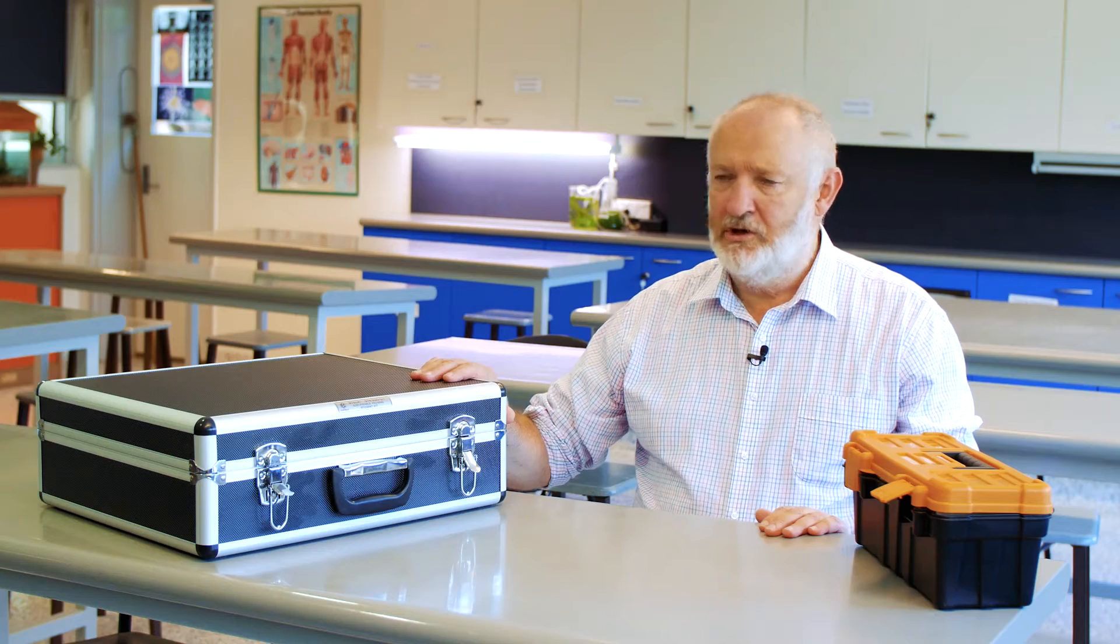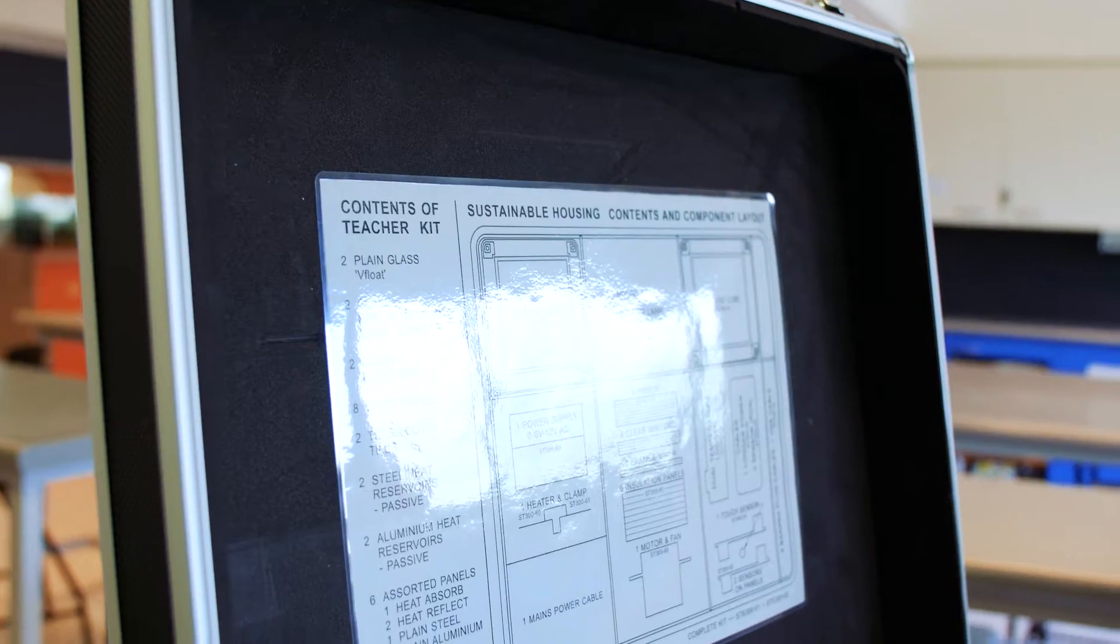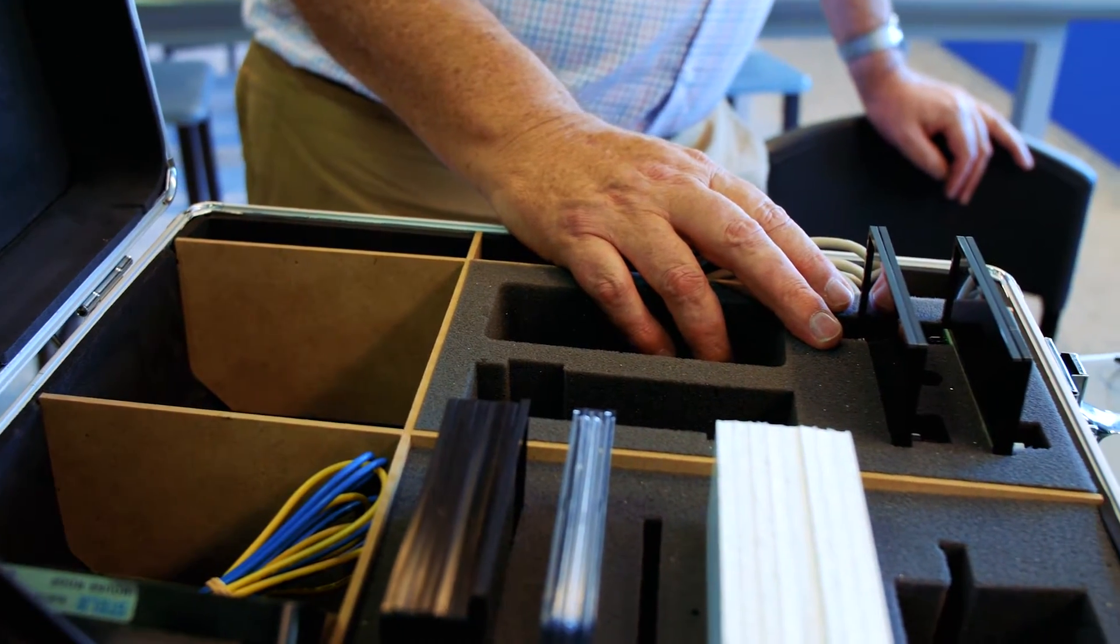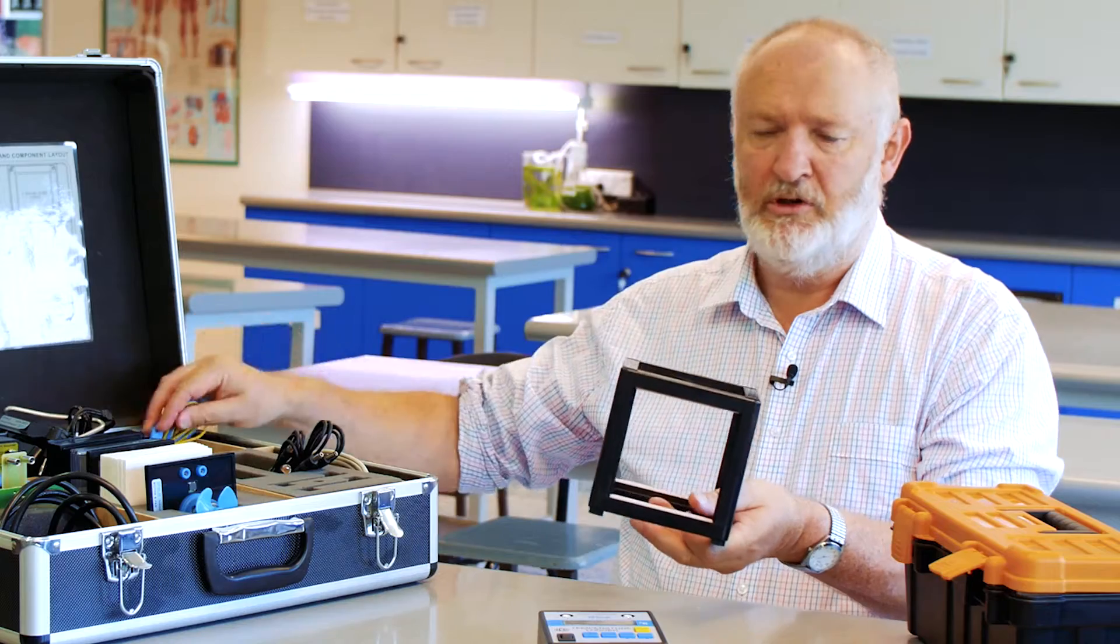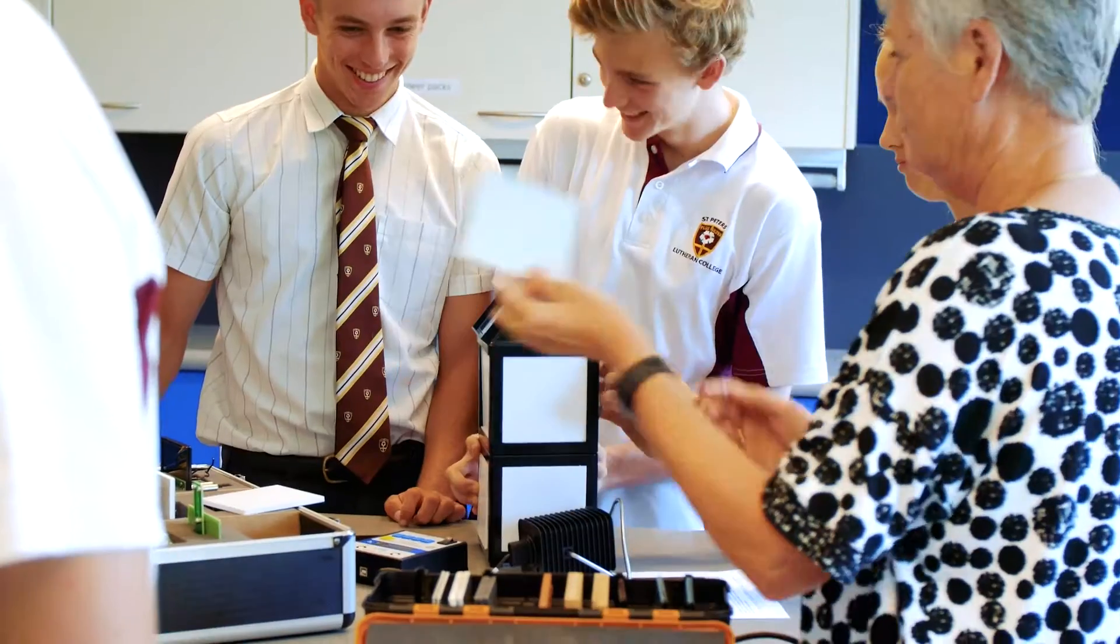In the sustainable energy kit, this is a student kit and this is a teacher demonstration kit. I'll start off with the student kit and we have a number of components. The main star of the show is the cube which has got a spring-loaded top and we can put all sorts of different panels in that.